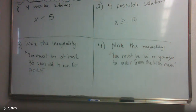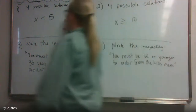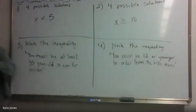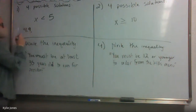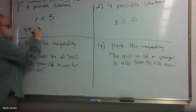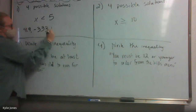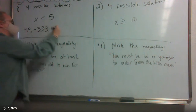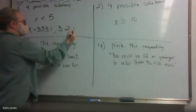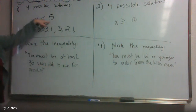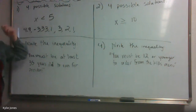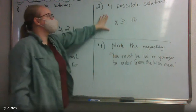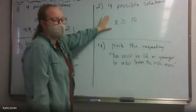Let's go ahead and review these. Our first one — we need four possible solutions. What numbers can we put in for x to make this true? Any numbers that are less than five. What did you get? 4.9. Negative 333, negative 110. What else? Three, two, one. Can I put the number five? No, because it's not equal to — you cannot use five. It has to be anything less than five.